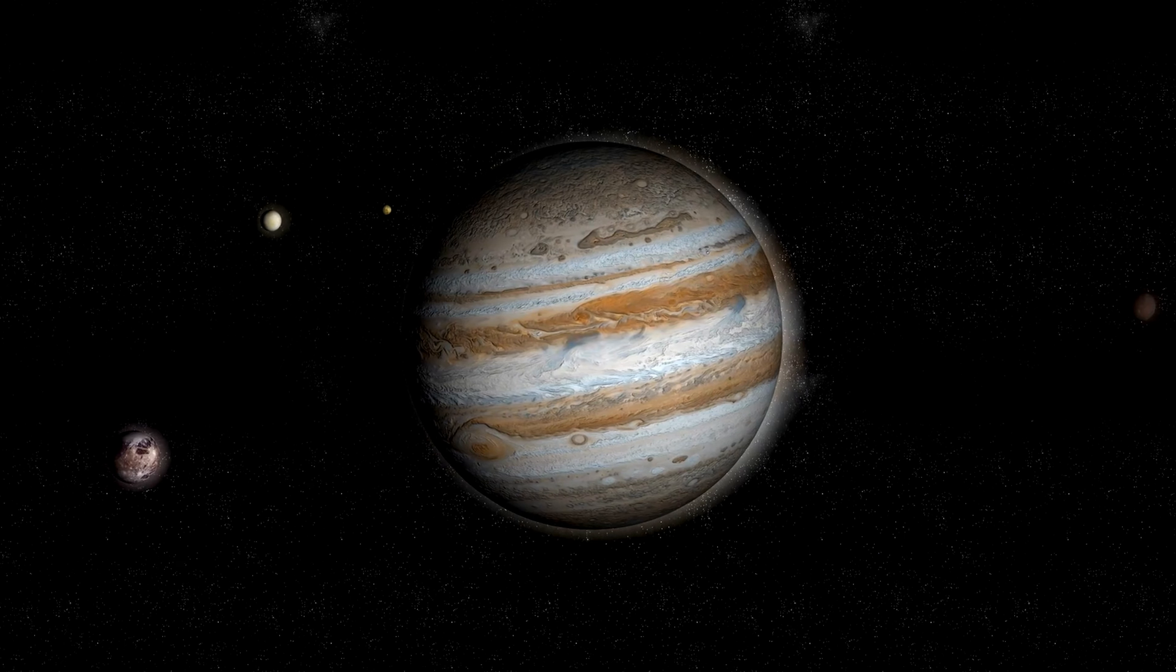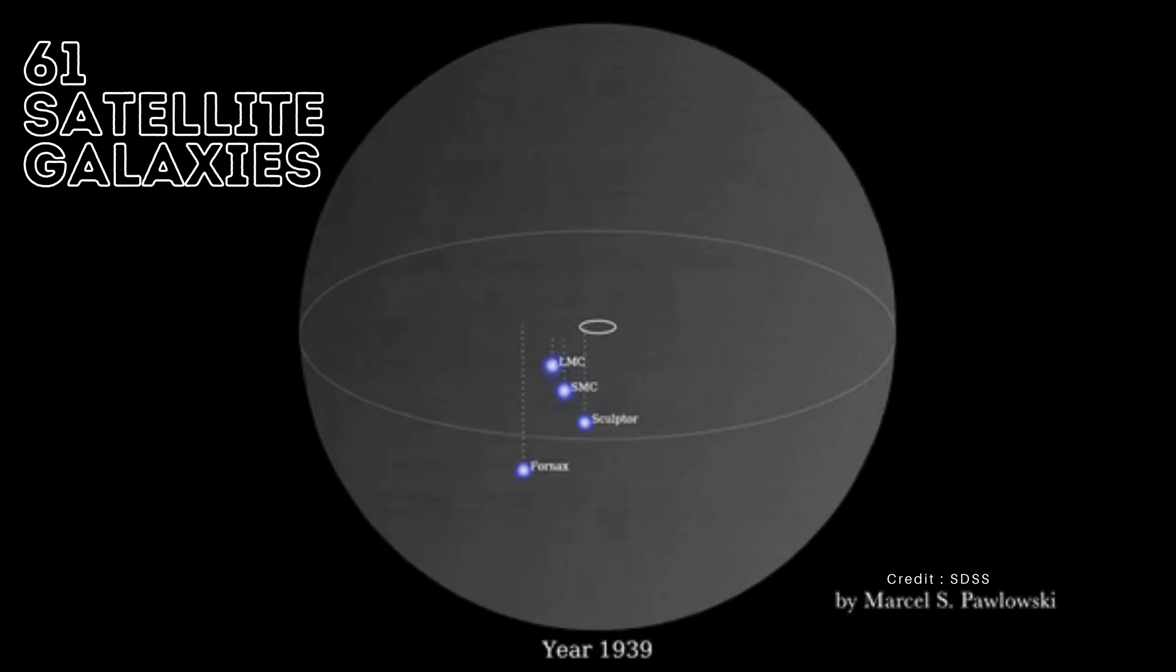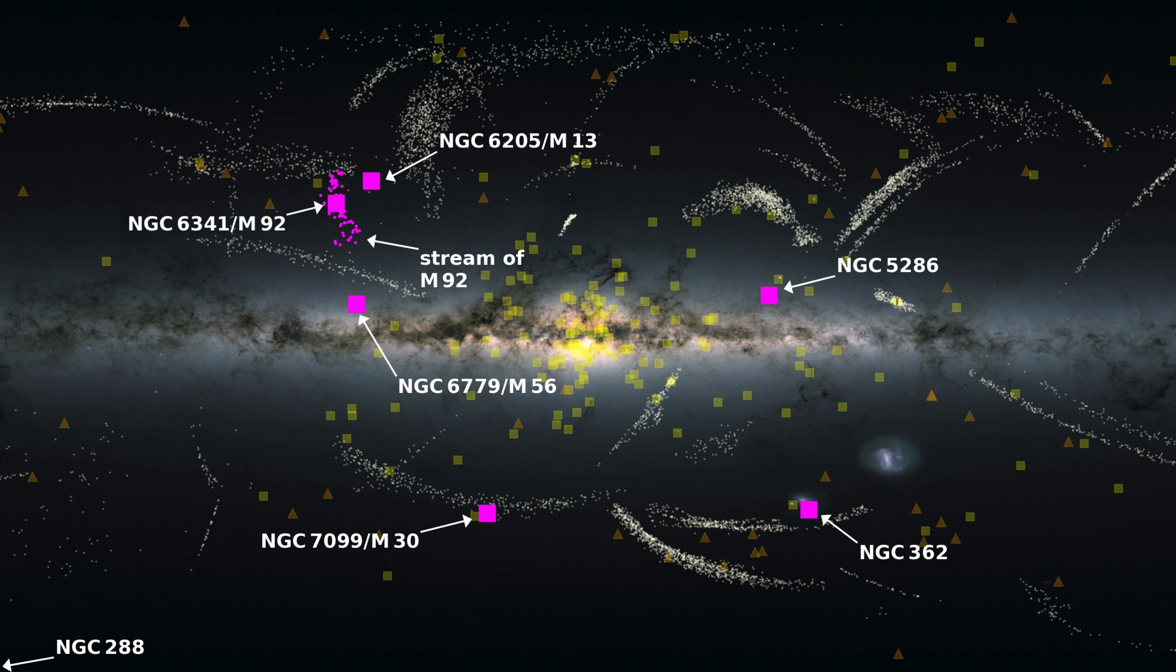You know, like Jupiter having 95 moons or 95 satellites, our Milky Way galaxy has 61 satellite galaxies, small, tiny-sized galaxies orbiting around. And recently, we found a total of six satellite galaxies currently merging with the Milky Way.